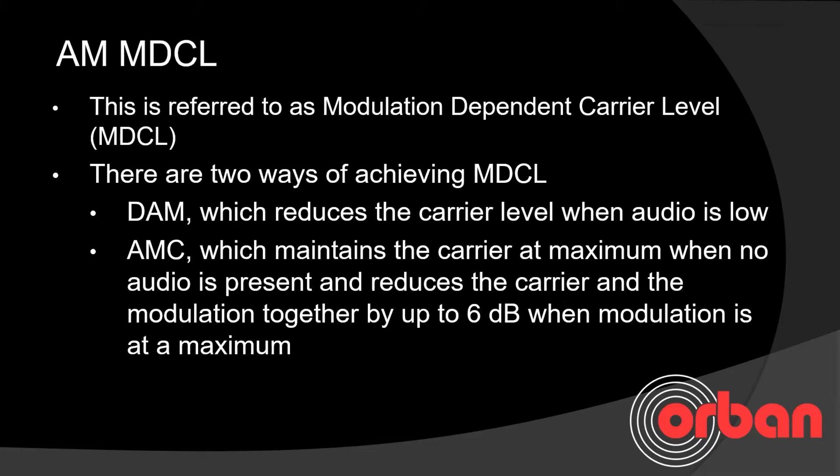Suppressing the carrier based on audio is referred to as modulation dependent carrier level — MDCL. There are two ways of achieving MDCL: DAM, which reduces the carrier level when audio is low, and AMC, which maintains the carrier at maximum when no audio is present and reduces the carrier and the modulation together by up to 6 dB when modulation is at maximum.